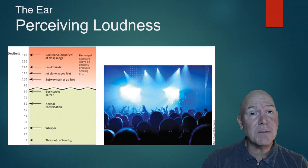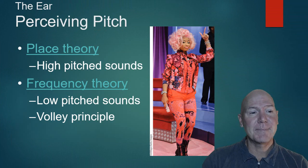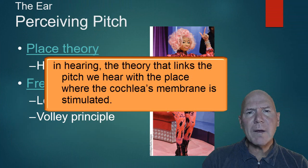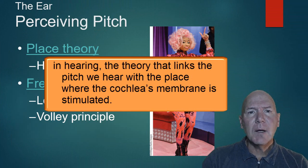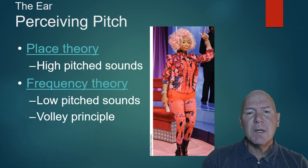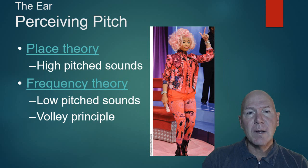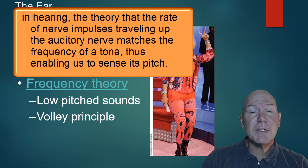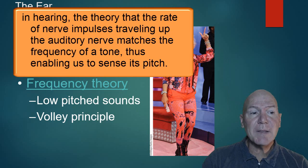How do we perceive pitch? Place theory states that where the hair cells on the basilar membrane are stimulated dictates whether or not we hear a particular sound — high pitch sounds affect the smaller ones, which is why we lose that over the course of our lives. Frequency theory has to do with how quickly the impulses are transferred — it's more of a speed thing, as opposed to where stimulation occurs.